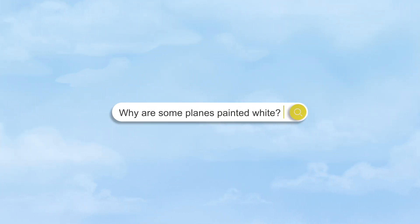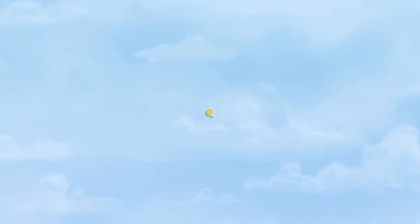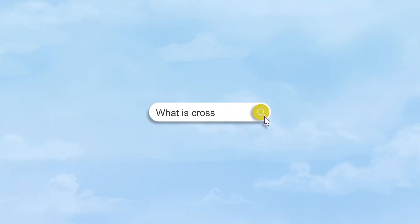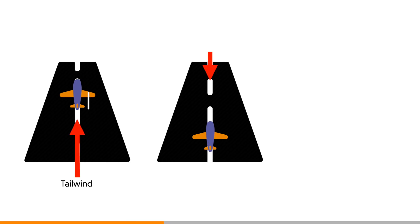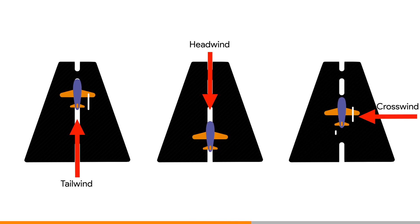Why are some planes painted white? The color white reflects sunlight. What is crosswind in aviation? A crosswind is a nightmare to a lot of pilots — though I actually like it, it's challenging. We all know that you take off and land against the wind, which is aerodynamically much better. Sometimes the wind is not in the same direction as the runway — it comes from the left or the right. That's when we call it a crosswind.